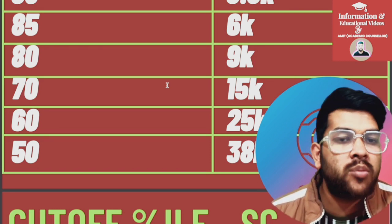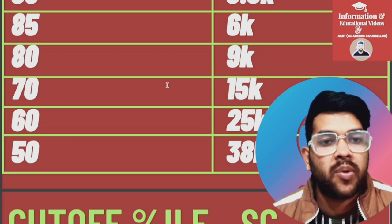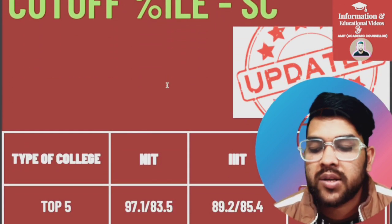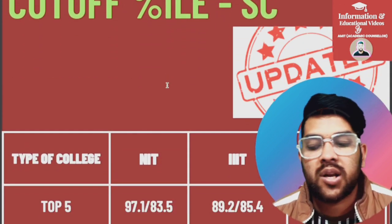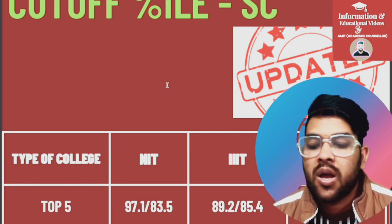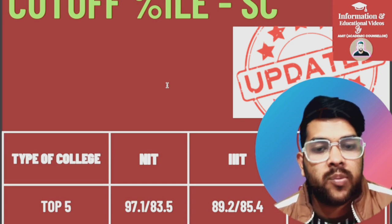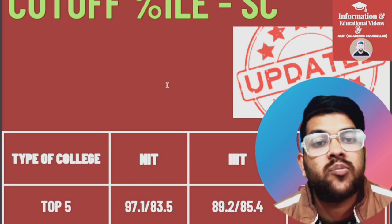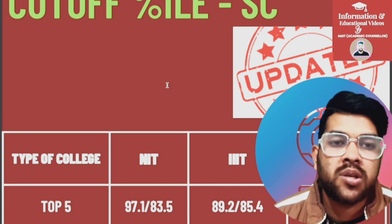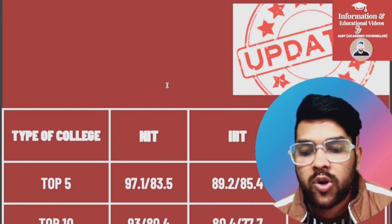If you are confident about your information and the exam, you can do it yourself as well. Now continuing: for top 5 NITs, 97.1 percentile is needed for CSE, and 83.5 for any branch. If you are from the home state or if you are female, you can get the same college with a lower percentile as mentioned.